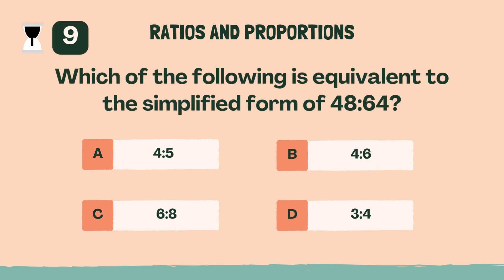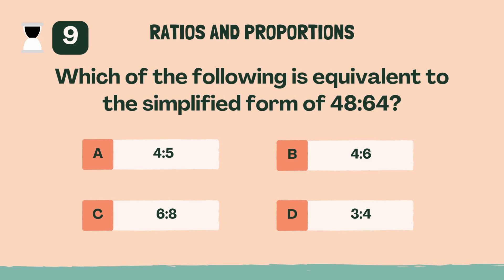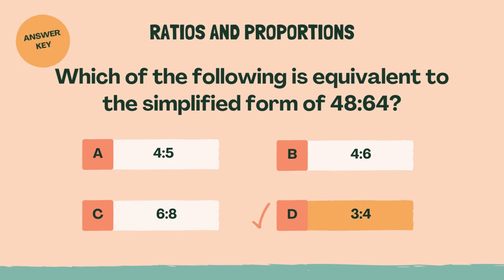Which of the following is equivalent to the simplified form of 48 to 64? D, 3 to 4.